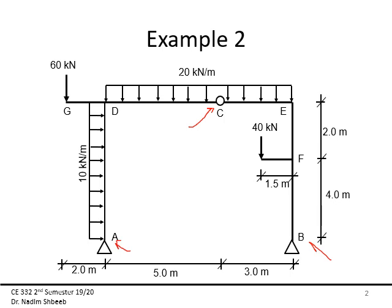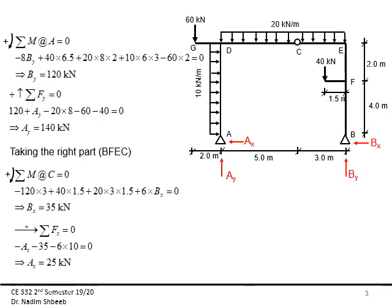The presence of this internal hinge at C is actually what's making this structure fully determinant. Before we start drawing, we need to figure out what the reactions are. I'm assuming the directions of Ay, Ax, By, and Bx. Since both of the reactions are level, I could take the moment either about A or about B. I elected to take the moment about A, using clockwise as my positive sense.